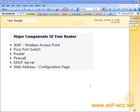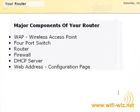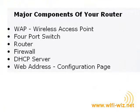Most wireless routers are actually several different devices in one: a wireless access point, or WAP, a four-port switch, a router, a firewall, and a DHCP server.